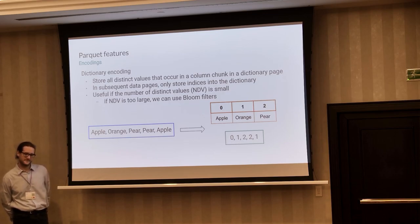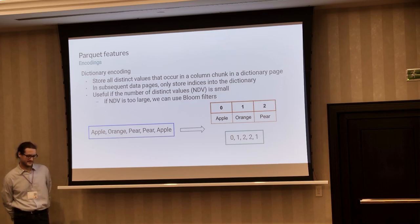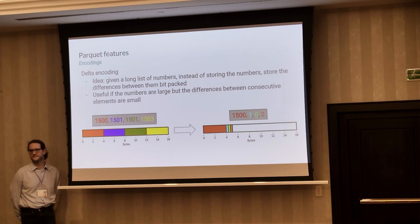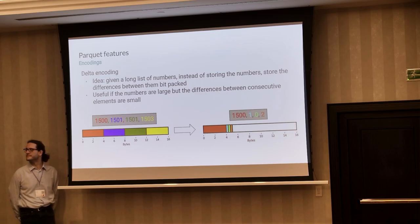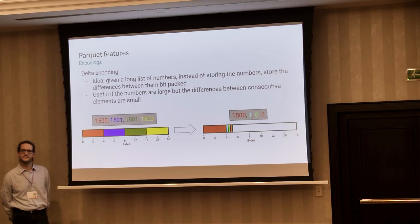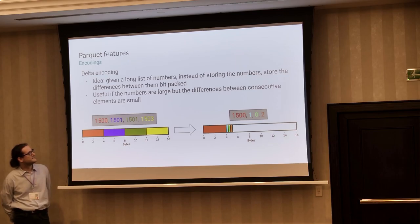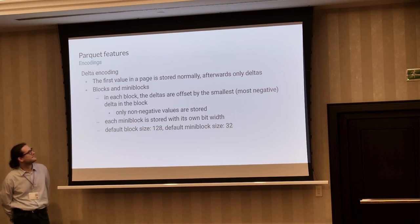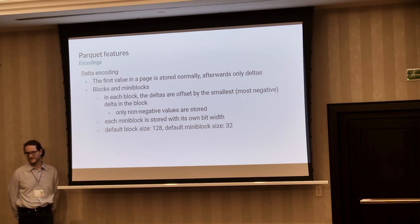As you can see in this image, we construct a dictionary on the fly and only store indices with a bit-packed run-length encoding. Next is delta encoding, for which I actually implemented a reader and writer a couple of years ago. This encoding is applicable for integers. Instead of storing all the values as they are — and they may be huge — we store the differences between consecutive values and bit-pack these differences. If the differences between the values are small, we can use a lot fewer bits and use much less space on disk. The first value has to be stored normally, but afterwards in delta encoding we only use deltas.